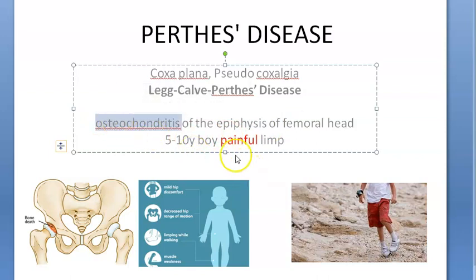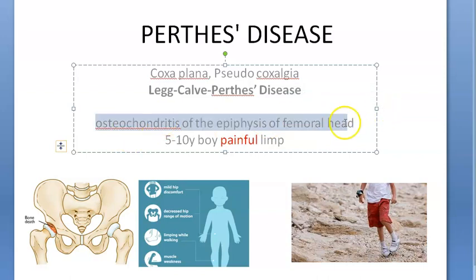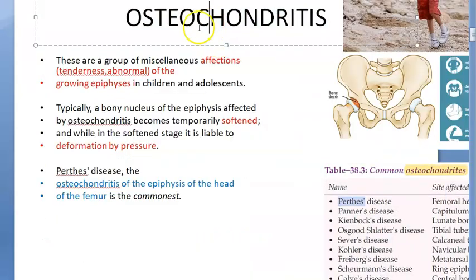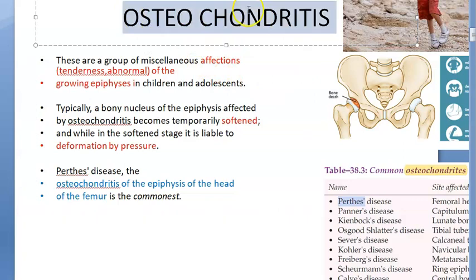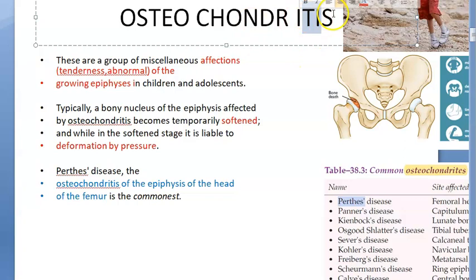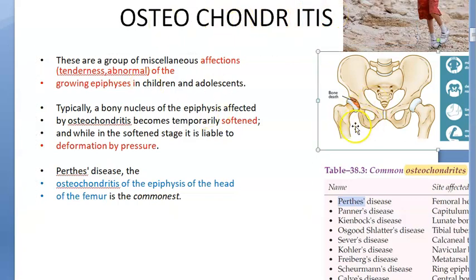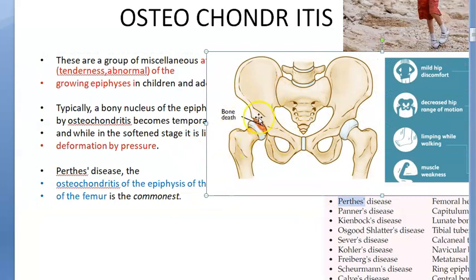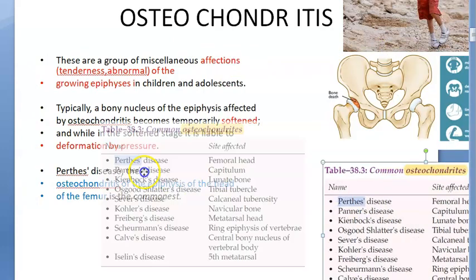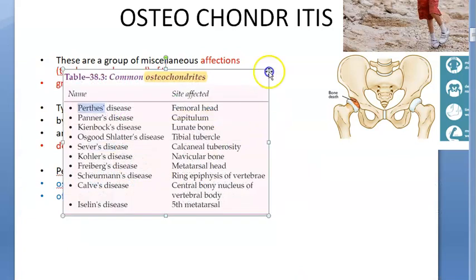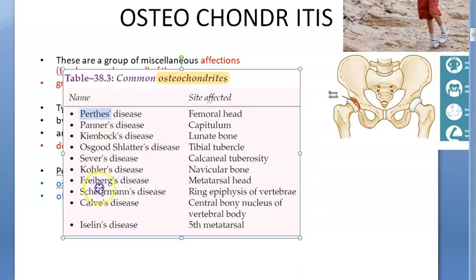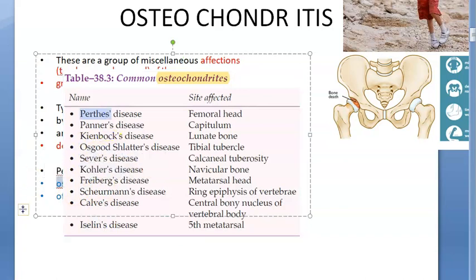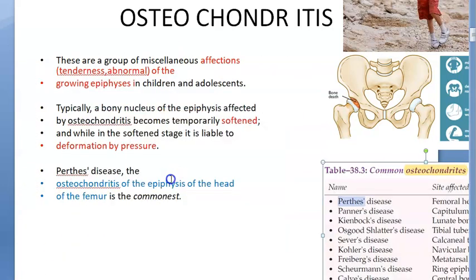So what is happening here? There is osteochondritis of the epiphysis of the femoral head. Osteochondritis means inflammation of bone and cartilage — bone death has been indicated. There are many types of osteochondritis, but in this video we will only look at Perthes' disease, which affects the femoral head.